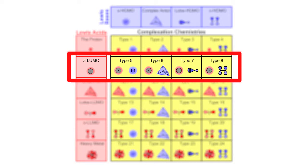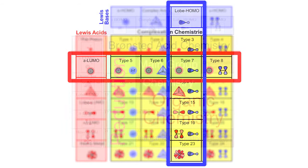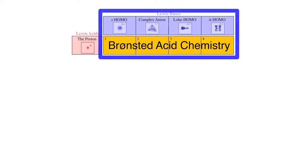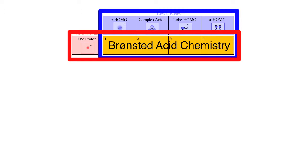For example, S-LUMO Lewis acids interact with lobe HOMO Lewis bases to give type 7 complexes. We can map various types of reaction chemistry to the matrix. For example, cells one to four are all Bronsted acids, so reacting the four types of Lewis bases with the proton Lewis acid gives us Bronsted acids.